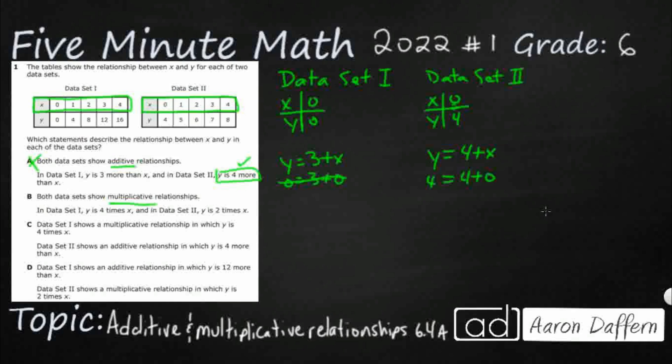Both data sets show multiplicative. Probably not going to work, because data set 2 looks additive. But let's see. Data set 1, y equals 4 times x. So, y equals 4x, which means 0 equals 4 times 0. Yeah. That looks pretty good. But then we've got, in data set 2, y is 2 times x. y equals 2x. So, 4 equals 2 times 0. No. So, I kind of like this first one here, but not the second one. So, let's see if we can find that mix here.